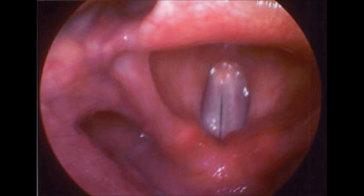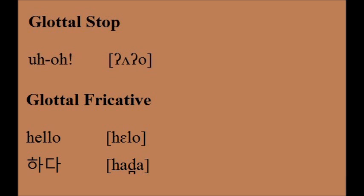Next are glottal sounds, which are made with the glottis or vocal folds. This includes the glottal stop and the glottal fricative. Glottal stops are not a productive part of English and are generally absent in Korean. In English, you can hear it in the word UH-OH. The voiceless glottal fricative is found in English in the word HELLO, and in Korean in the word HADA.